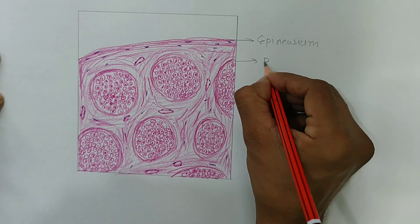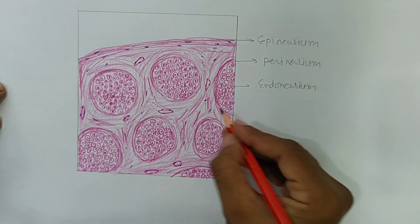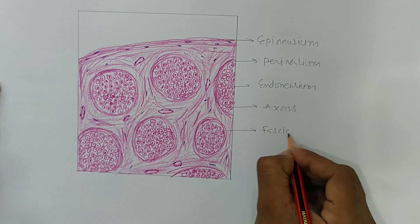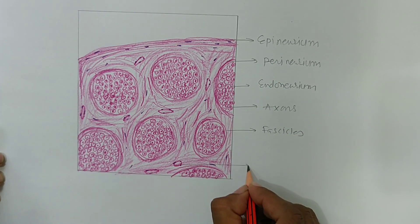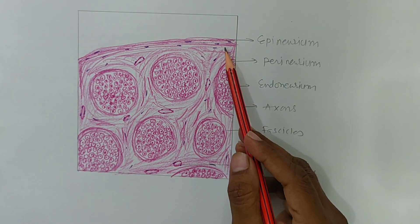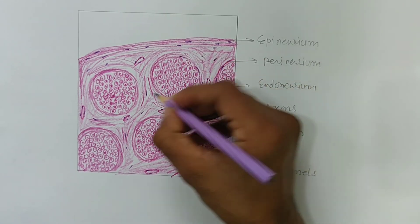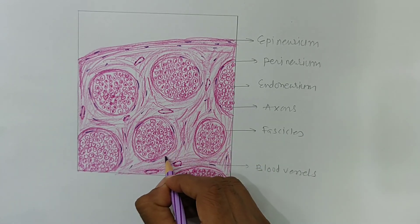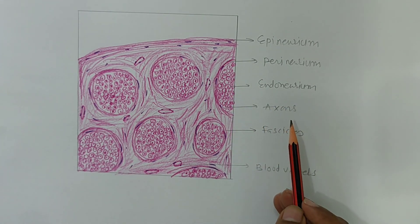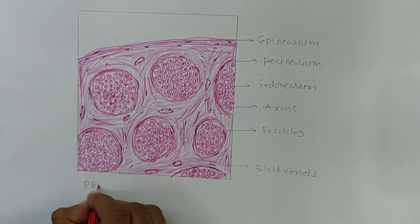This is called the perineurium. This is the endoneurium, and these are nothing but the axons. The whole bundle is called a fasciculus, and these are the blood vessels. So: epineurium, fasciculus, perineurium — inside the perineurium there is the endoneurium, these are the axons which are myelinated, the whole bundle is called a fasciculus, and these are the blood vessels. We label it as peripheral nerve in transverse section.